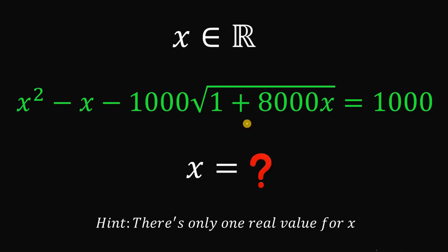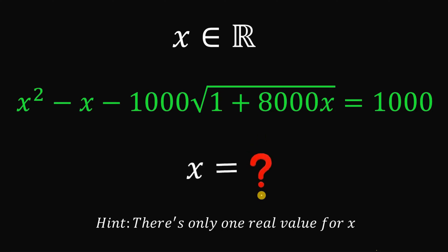There's only one value of x in this question. Suppose x is a real number that satisfies the equation x squared minus x minus 1,000 multiplied by the square root of 1 plus 8,000x equals 1,000. Our goal is to solve for the value of x. Pause the video and see if you can answer this question, and post your answer in the comment section below.